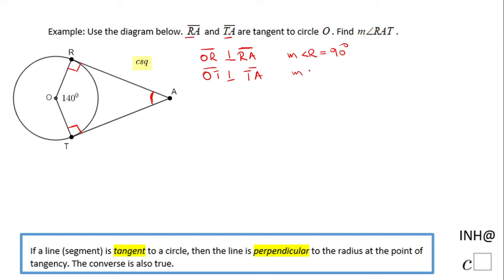Now we can take a look in the quadrilateral O R A T. The sum of the interior angles of this quadrilateral is 360 degrees. So I'm gonna write the measure of angle O plus the measure of angle R plus the measure of angle A or R A T plus the measure of angle T equals 360.